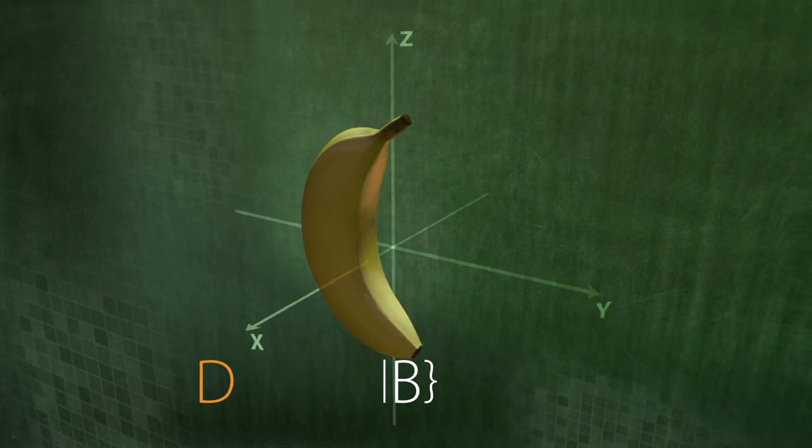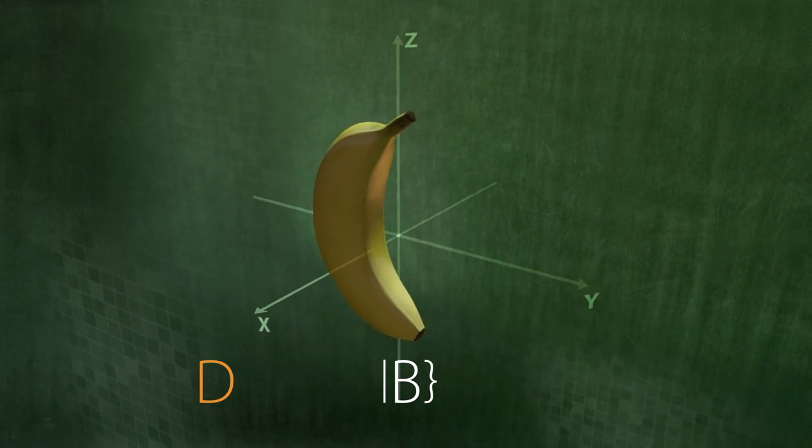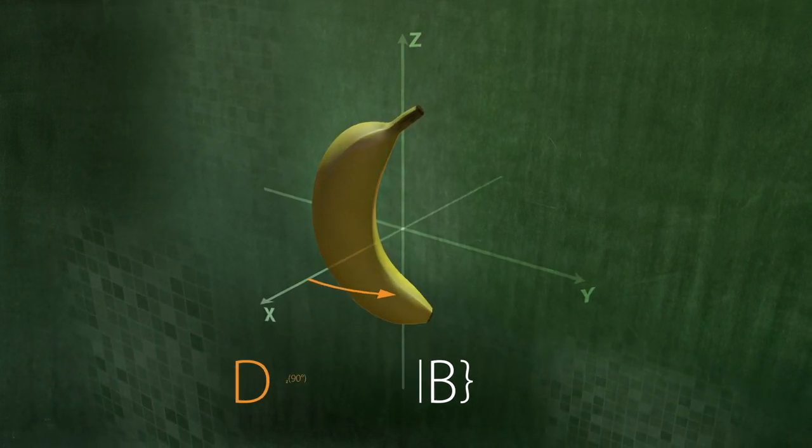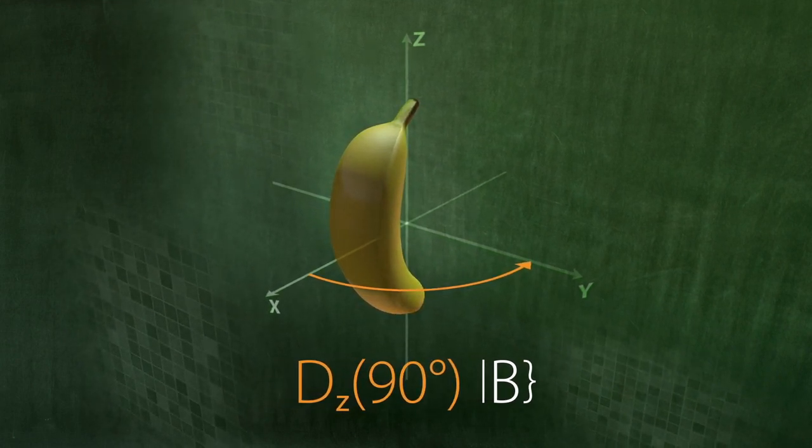The rotation operator D manipulates only the banana's rotation property. The banana will not change its taste, just because you rotate it, for example, by 90 degrees about its z-axis, right?